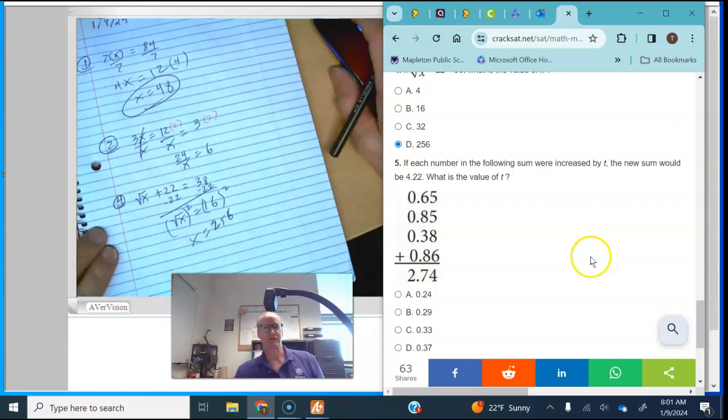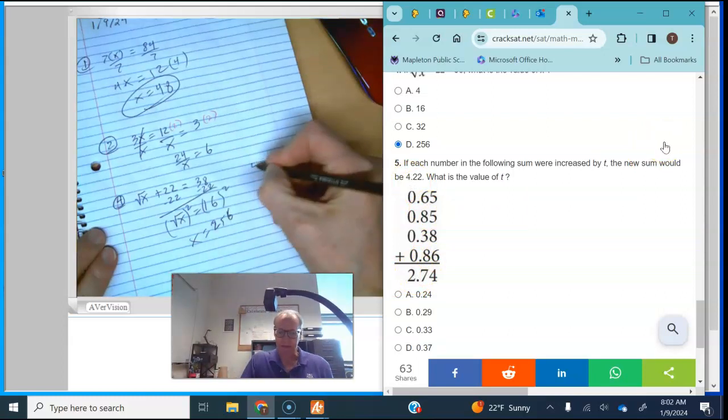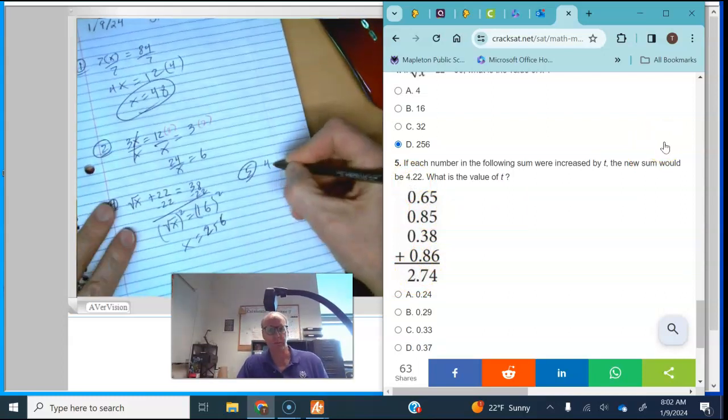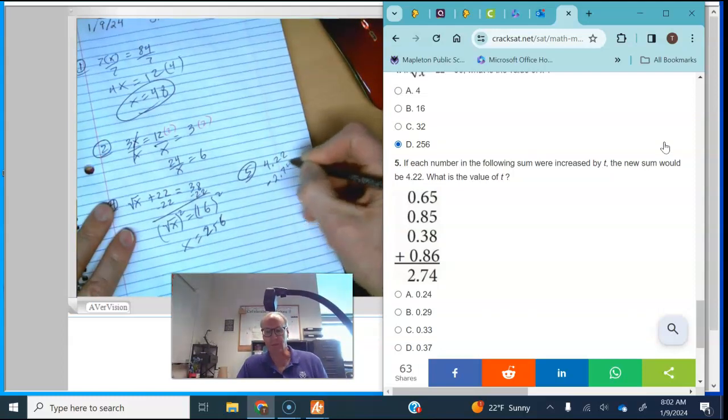Now number five is a little tricky. It says if each of the numbers in the following sum were increased by t, the new sum would be 4.22. What is the value of t? Well, we ended up adding 2 to this. No, we didn't. Excuse me. So I'm going to take number five. I'm going to take 4.22 and I'm going to subtract the 2.74 from it. Now, got to be a little bit careful here.